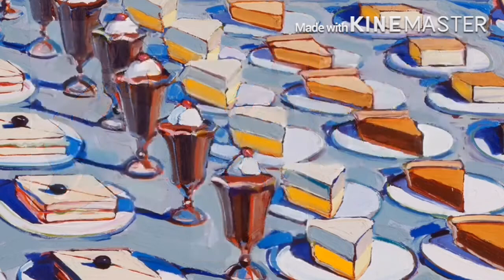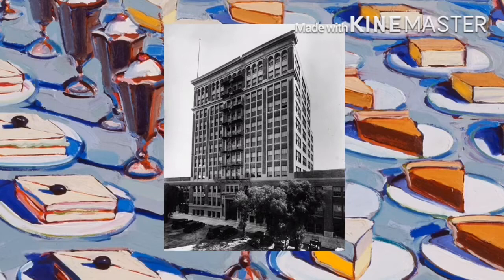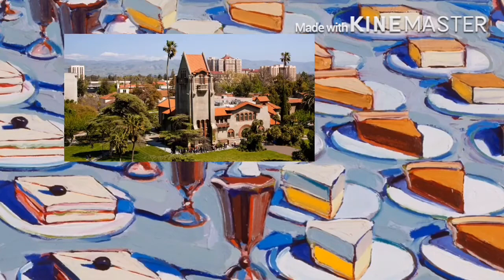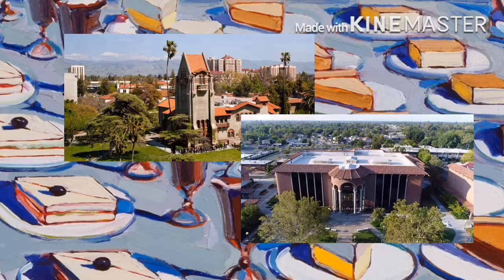Wayne Thiebaud would go on to study at Frank Wiggins Trade School in Los Angeles and work as a cartoonist and designer in California and New York City. He also worked as an artist in the First Motion Picture Unit of United States Army Air Forces. In 1949, he enrolled at San Jose State University before transferring to Sacramento State College, earning a bachelor's and master's by 1952.